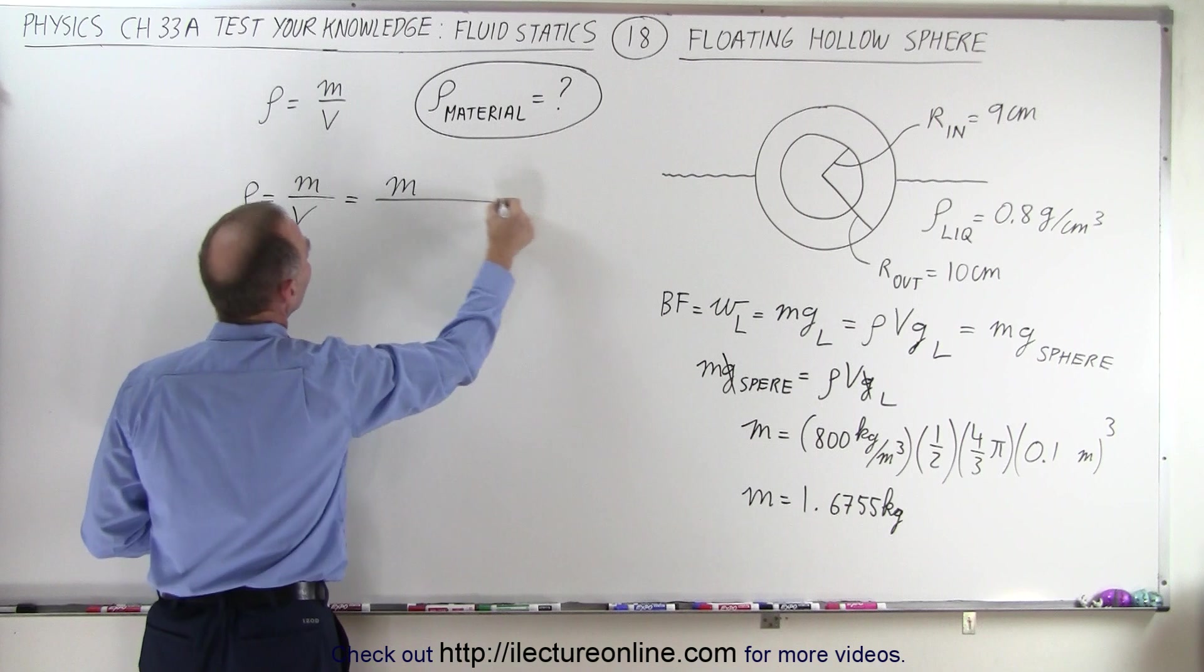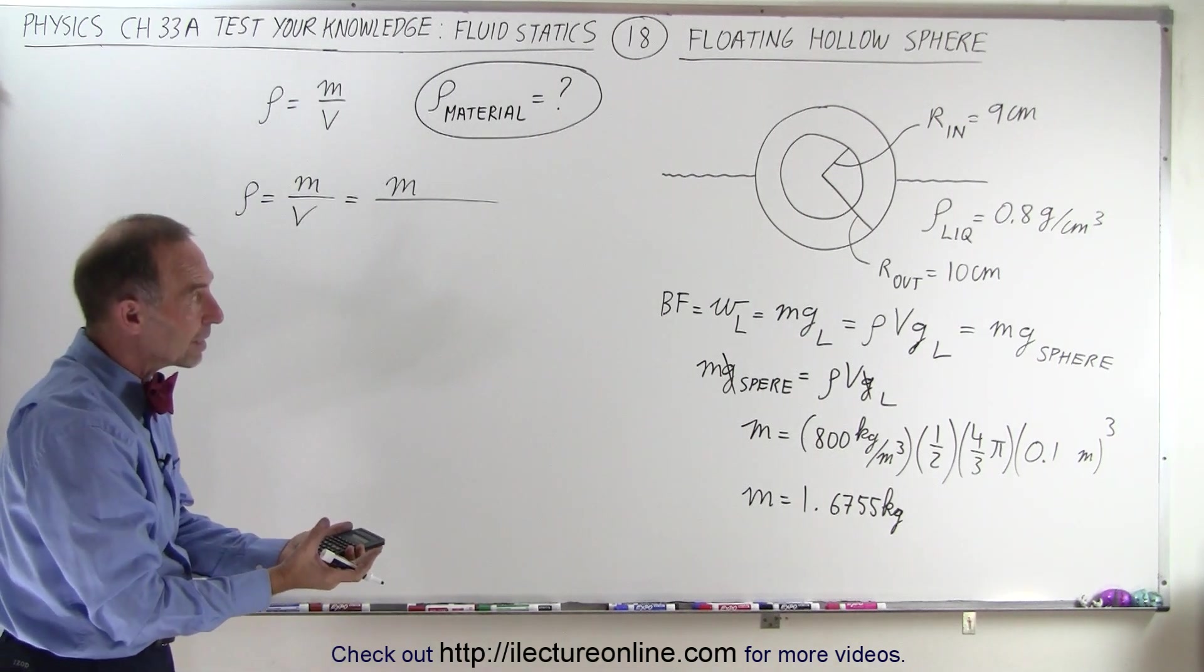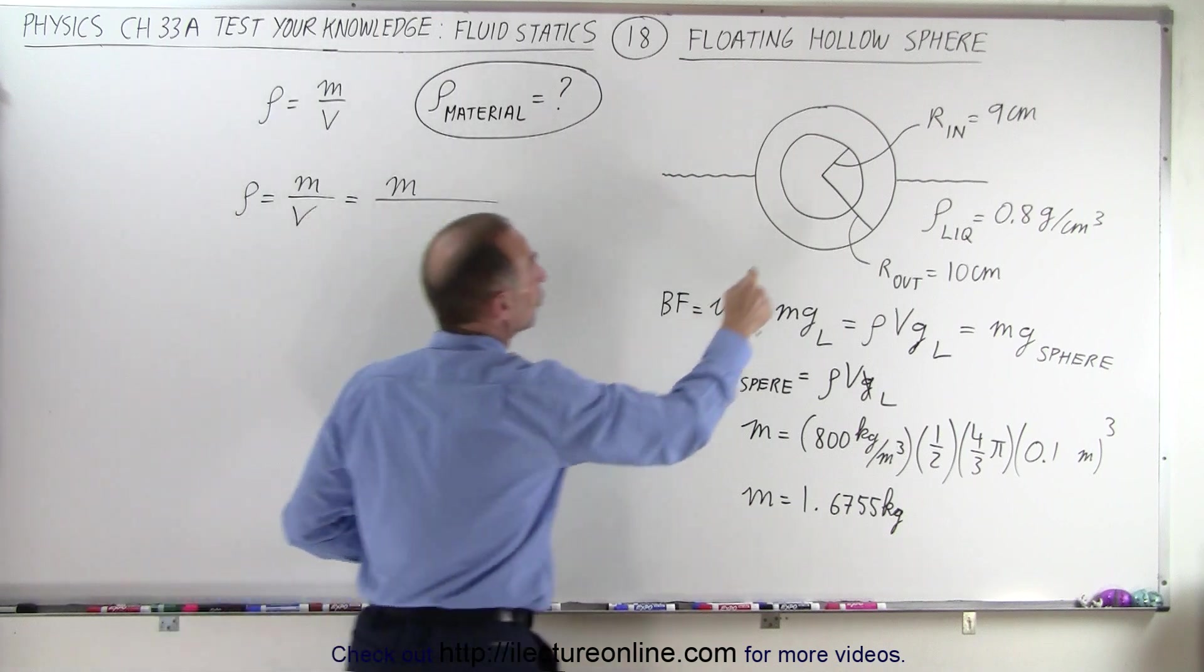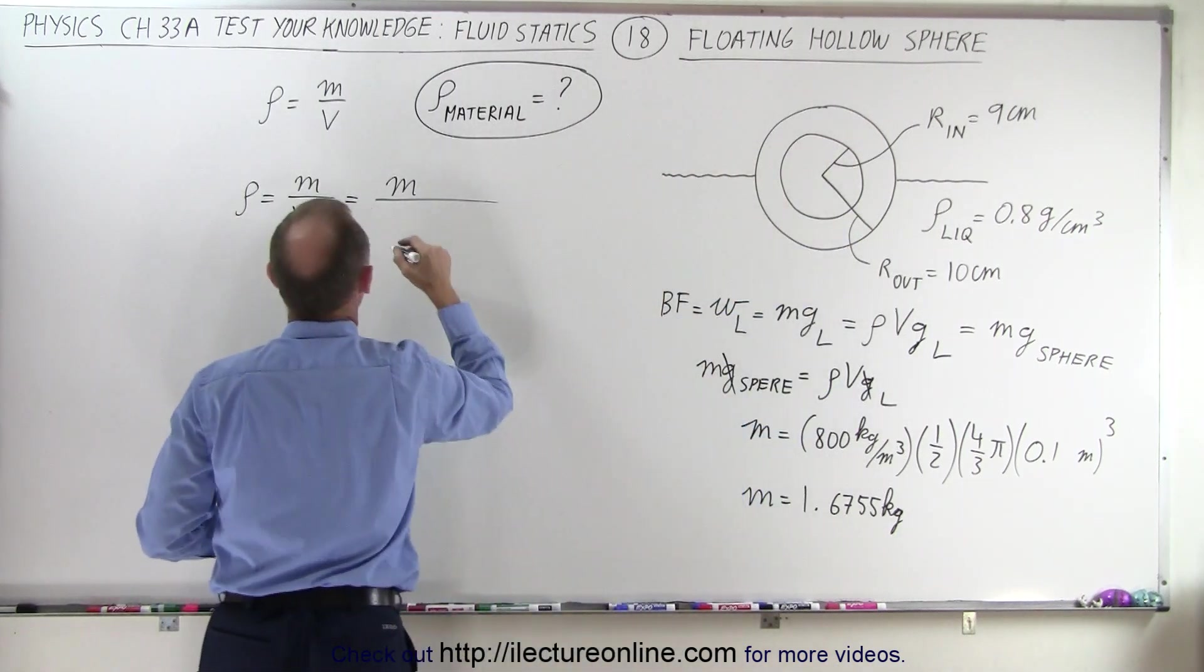The mass, we know what that is, but the volume, well, that would be the volume of the outer radius minus the volume using the inner radius, because we want to get rid of that inner portion, the hollow portion.